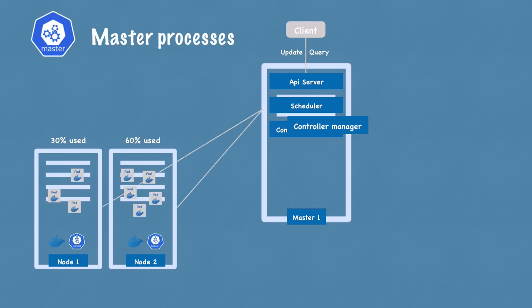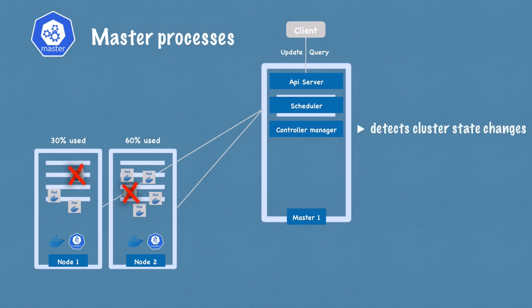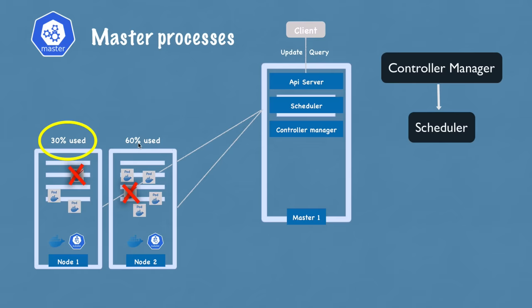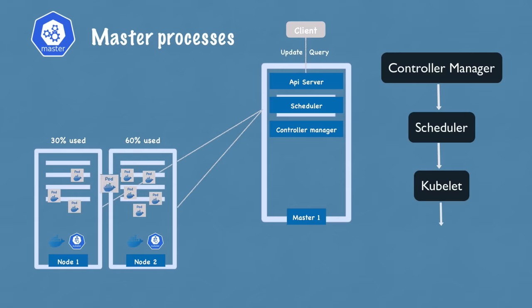An important point: the scheduler just decides on which node a new pod will be scheduled. The process that actually starts the pod with a container is Kubelet — it gets the request from the scheduler and executes it on that node. The next component is controller manager, which is crucial because when pods die on any node, there must be a way to detect that and reschedule those pods as soon as possible. Controller manager detects state changes like crashing of pods. When pods die, controller manager detects that and tries to recover the cluster state as soon as possible, making a request to the scheduler to reschedule those dead pods.